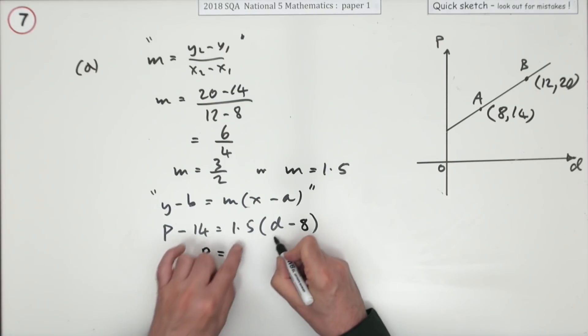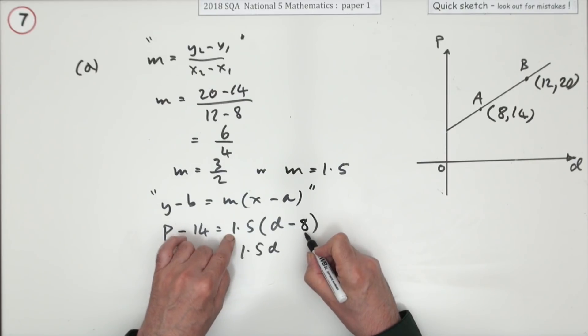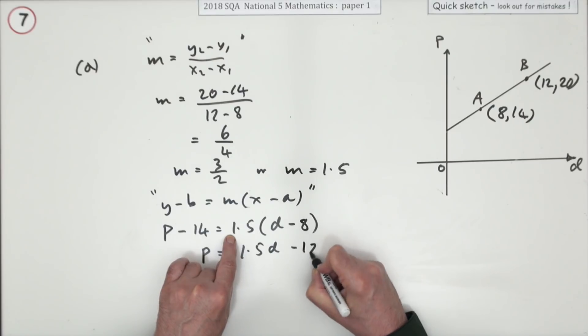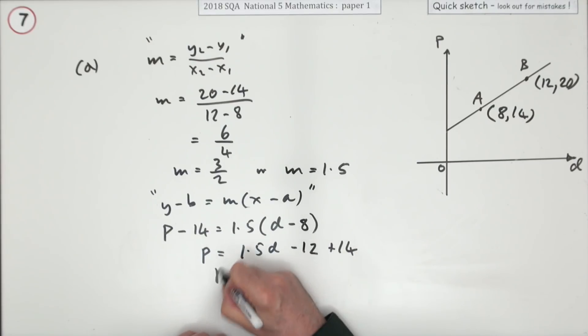So p is going to equal 1.5d. That's okay. Eight times one and a half, that's 12, so it'll be minus the 12, but plus the 14. You have to tidy that up, so p equals 1.5d plus 2.